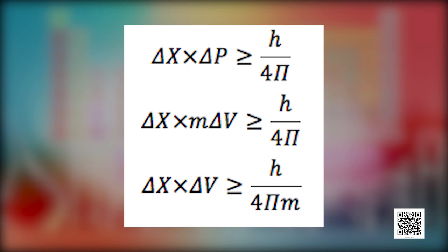This can also be written as delta x multiplied by m delta v, greater than or equal to h upon 4 pi, where delta x is the uncertainty in position and delta p or delta v is the uncertainty in momentum or velocity of the particle.